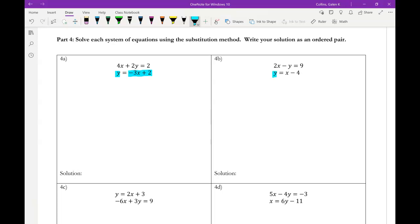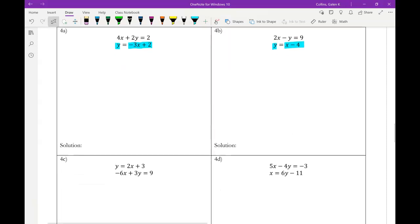And for b, y equals x minus 4, y is isolated. And for c, it's our top equation, y equals 2x plus 3. And in 4d, it's our bottom equation, and it is x that is isolated, but it doesn't matter what variable is isolated. So x equals 6y minus 11.